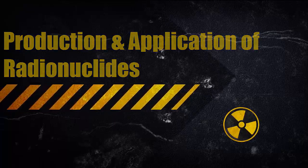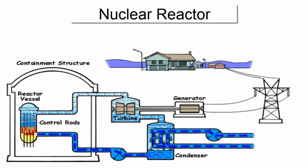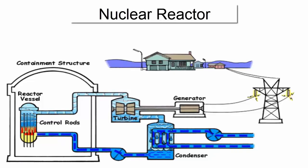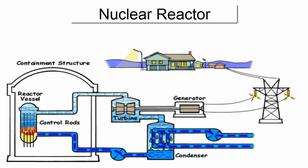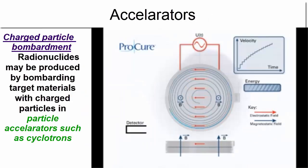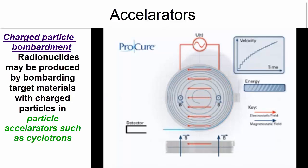Production and application of radionuclides. Radionuclides are produced by bombarding target materials with neutrons in a nuclear reactor or with charged particles in particular accelerators such as a cyclotron.